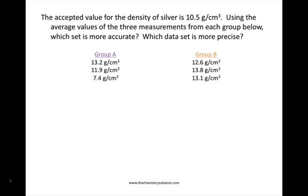Now let's look at an example using some real numbers. The accepted value for the density of silver is 10.5 grams per centimeter cubed. Using the average values of the three measurements from each group below, which set is more accurate? Which data set is more precise?